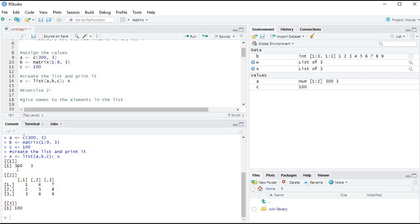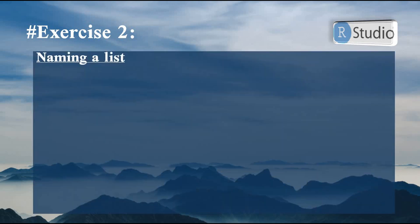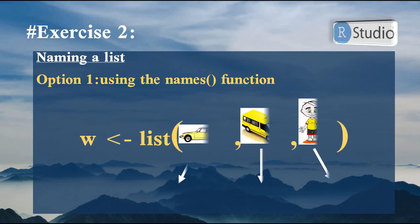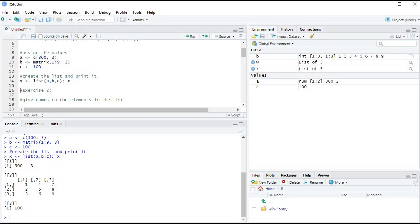In exercise two we will learn how to name a list. To name a list that already exists, we use the names() function. We take our list and assign a vector of three names to it using names() — 'my vector', 'my matrix', and 'my number'.